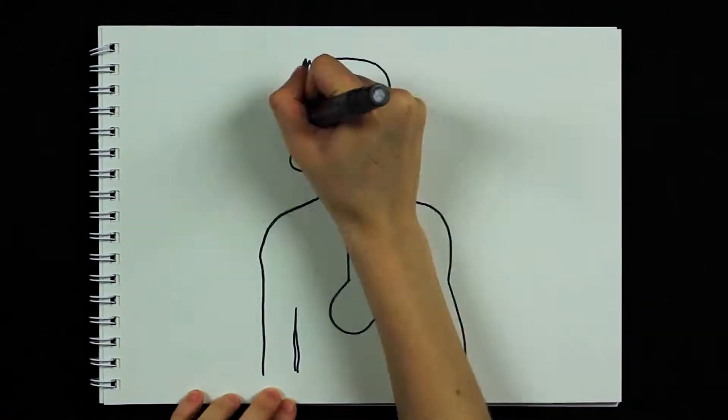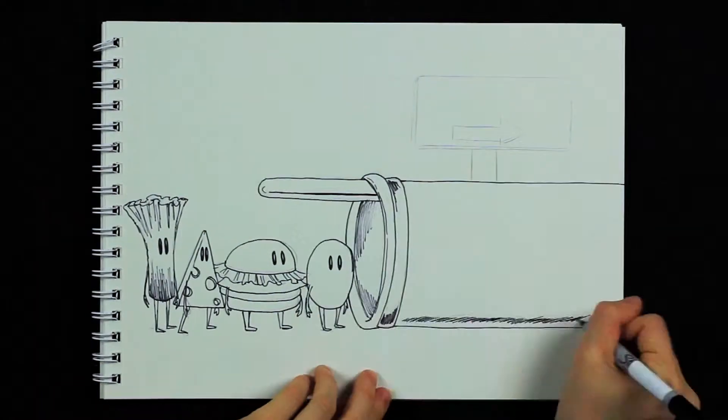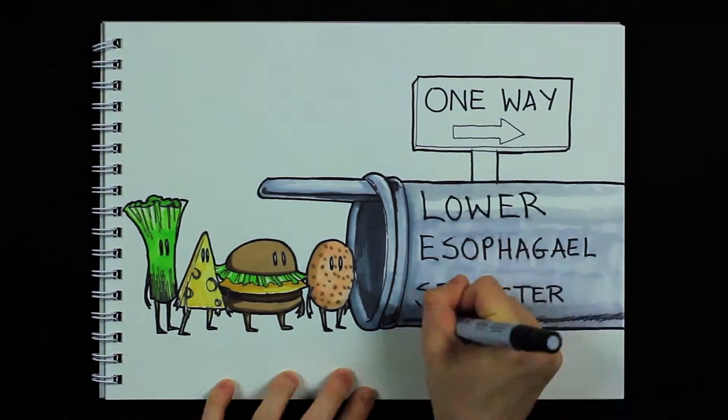So what causes acid reflux? Well, when you swallow food, it travels down your esophagus, the long tube that connects your throat to your stomach. When food reaches the end of the esophagus, it travels through a valve called the lower esophageal sphincter, or LES.